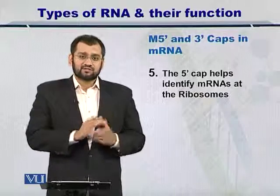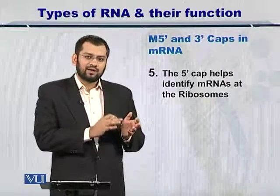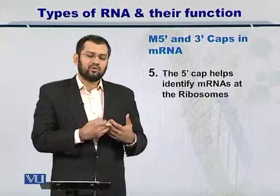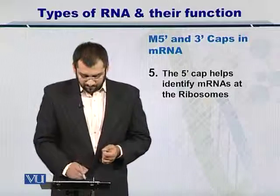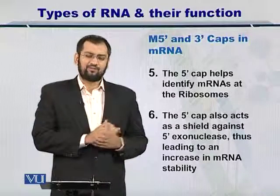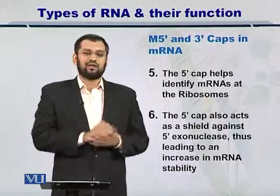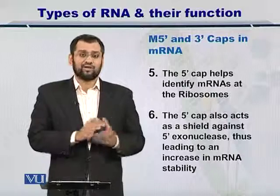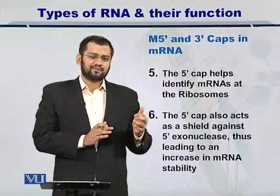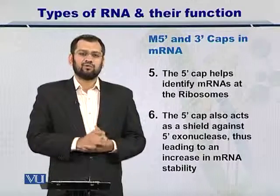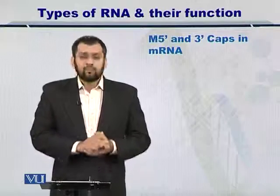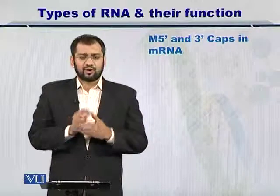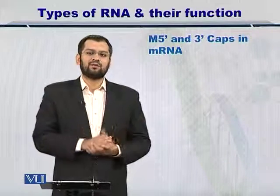Once the mRNA reaches the ribosomal sites, the five prime cap helps provide identification that the molecule which has just arrived is an mRNA. Moreover, these caps at the five prime end also help protect the mRNA from the five prime exonuclease. If the mRNA is damaged, the protein that is translated will also not be complete. Both the five prime end and three prime end together provide protection and hence enhance the stability of the molecule.